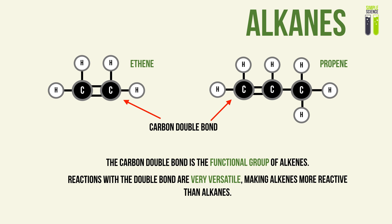The double bond is the functional group of the alkene, and therefore it is where reactions mostly take place. The double bond allows for very many types of reactions, which we are going to look at later. This makes alkenes more prone to reactions and therefore generally more reactive than alkanes.